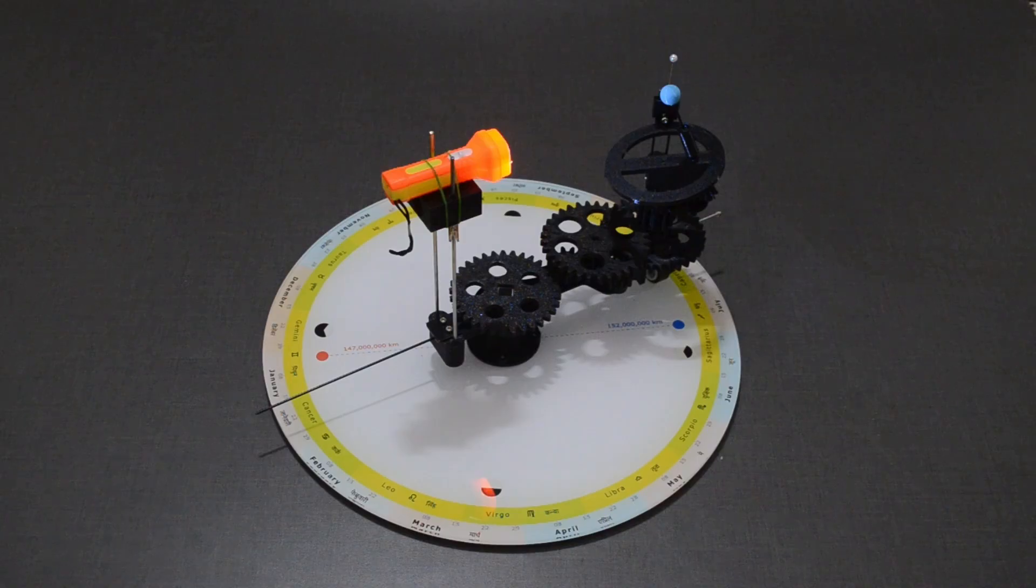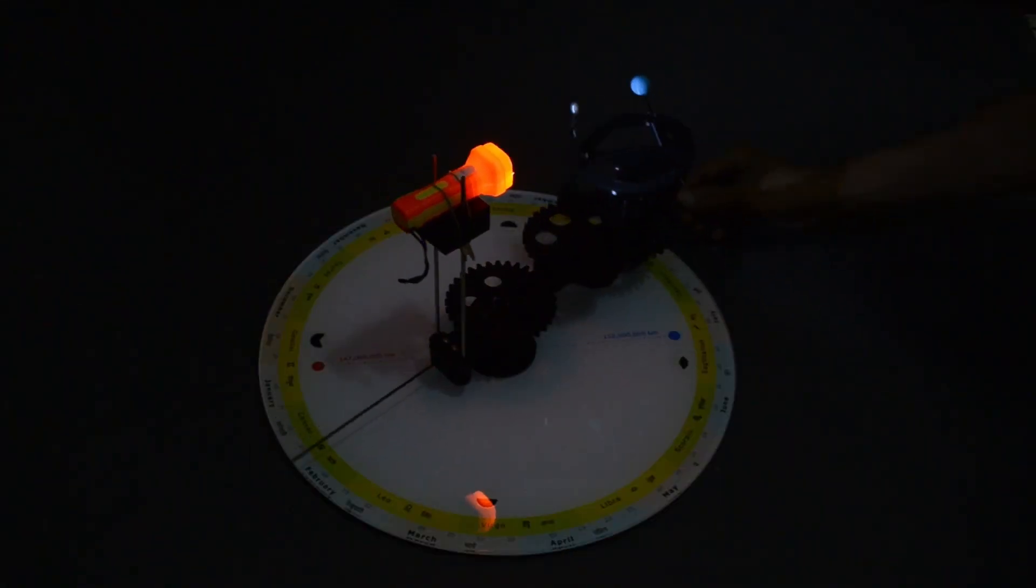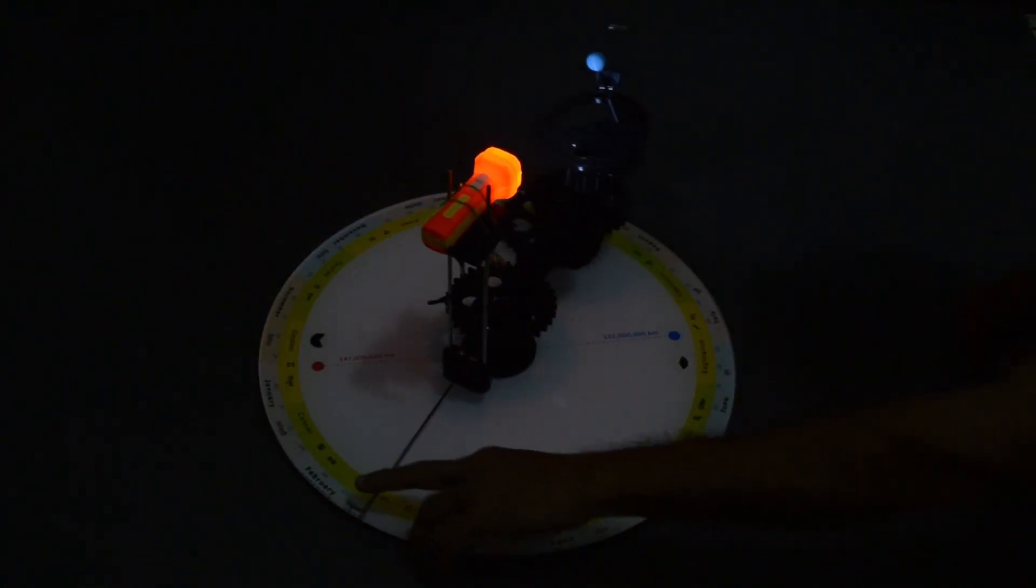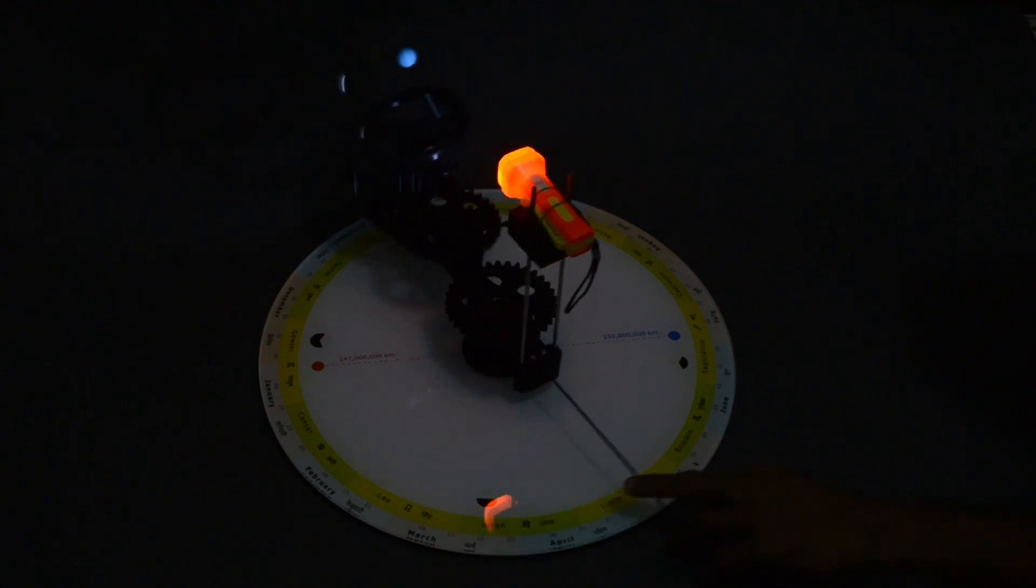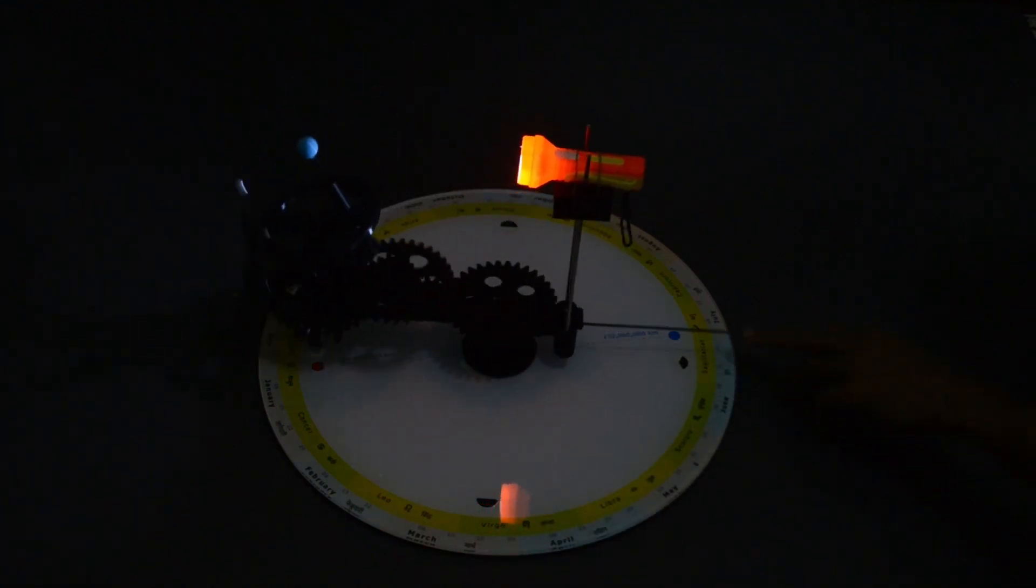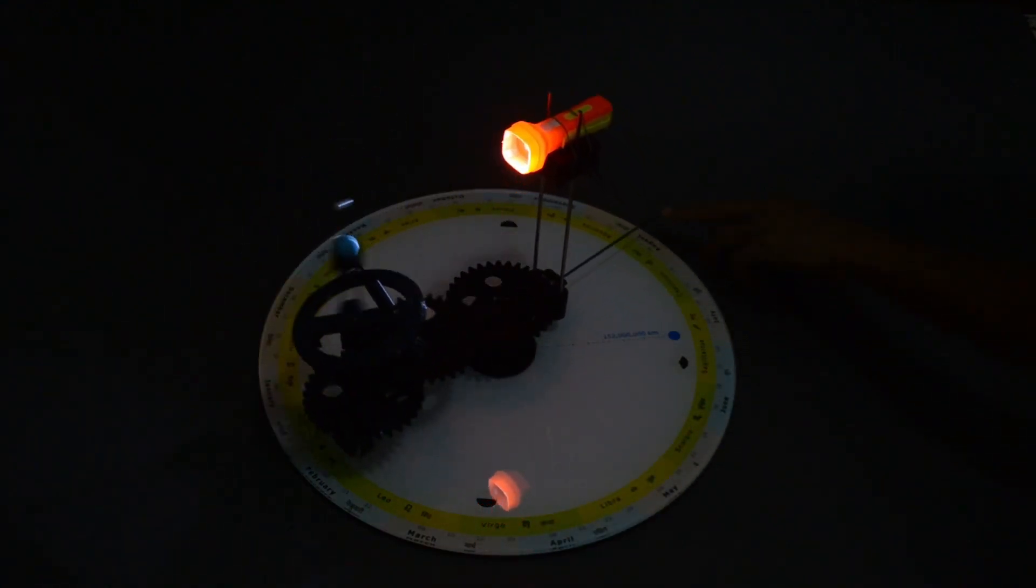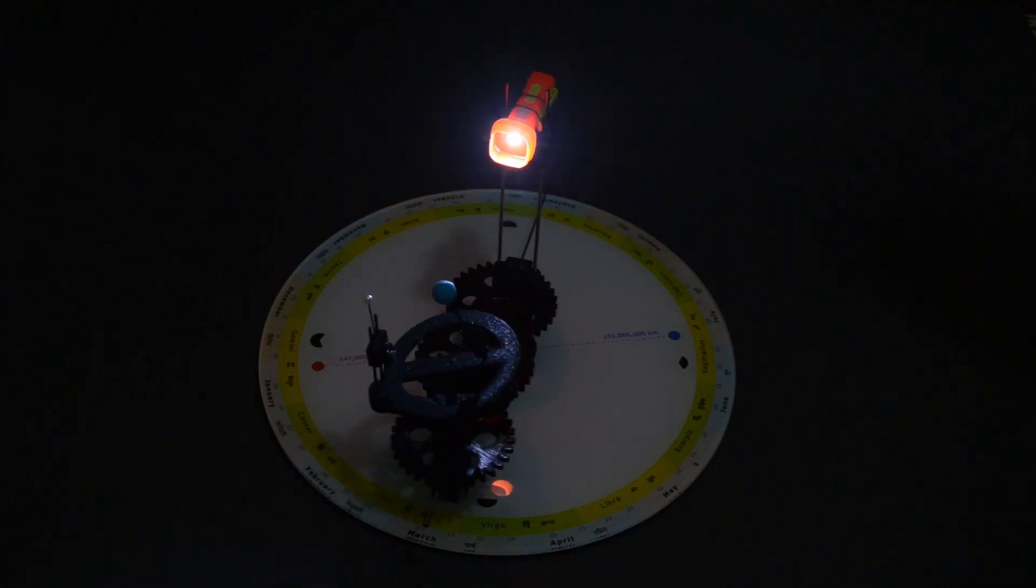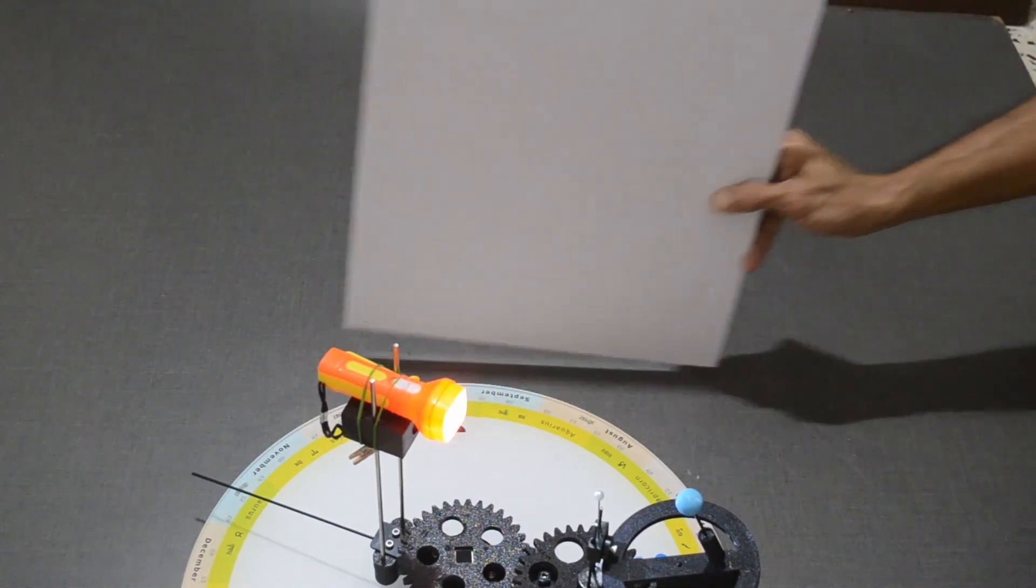With the help of this small Earth and Moon, let us simulate an eclipse. Game of shadows can be better visualized if we use this white sheet to project the shadows.